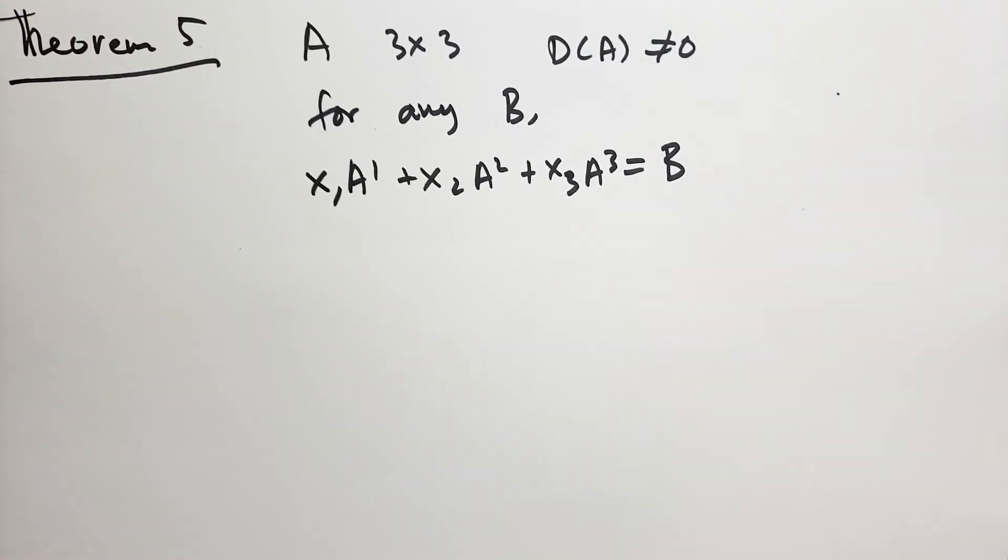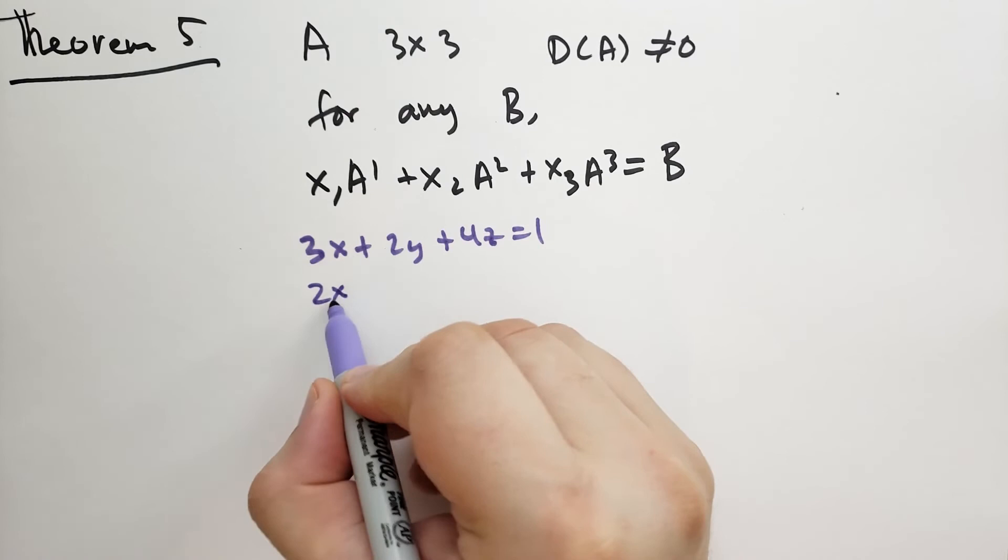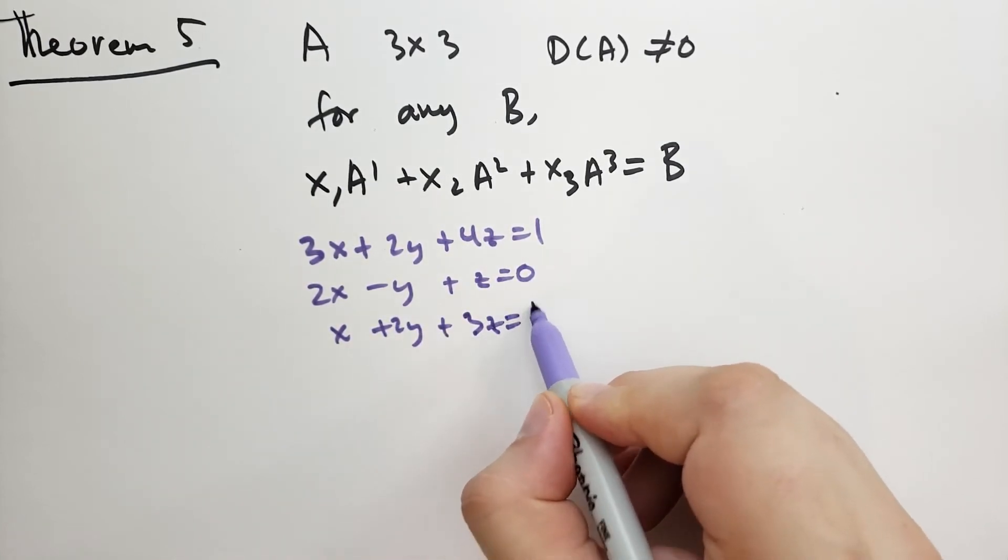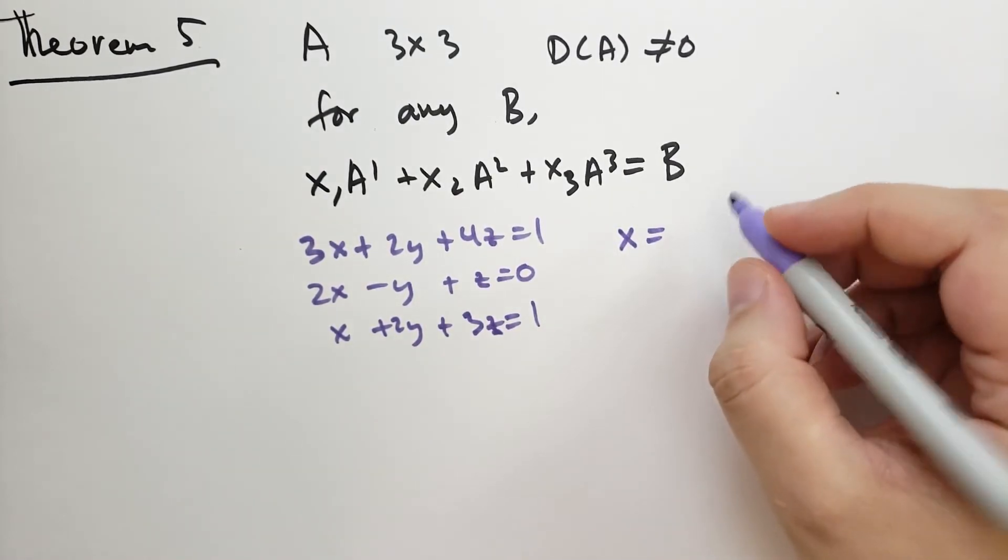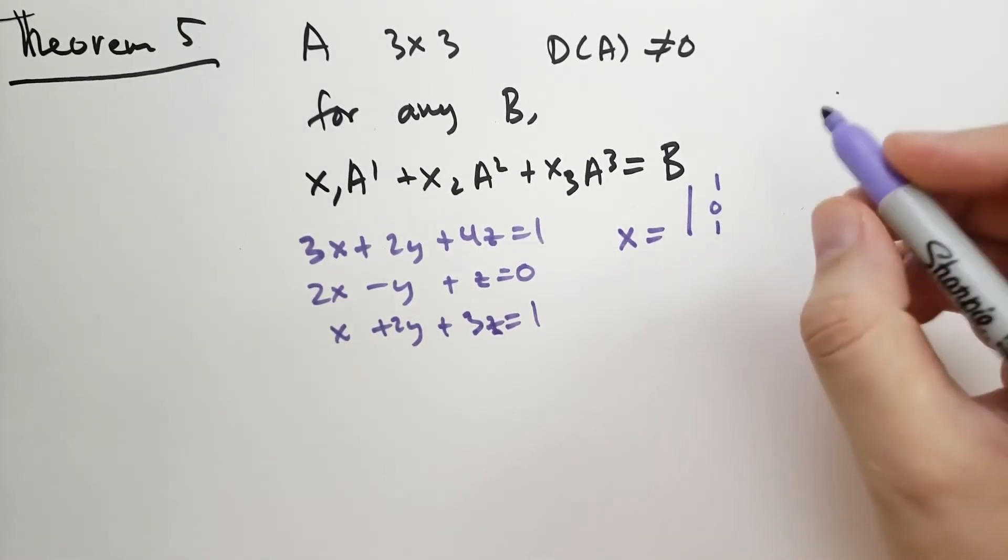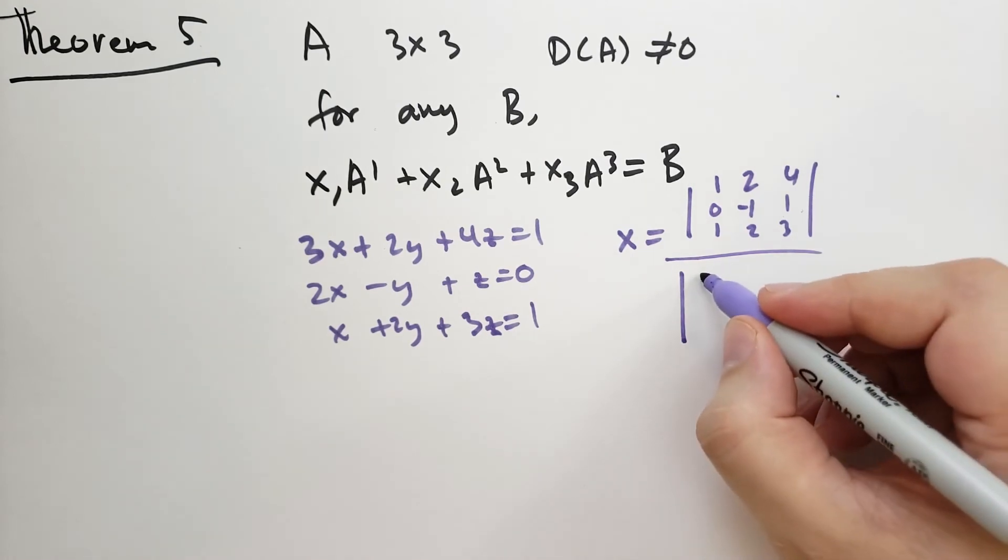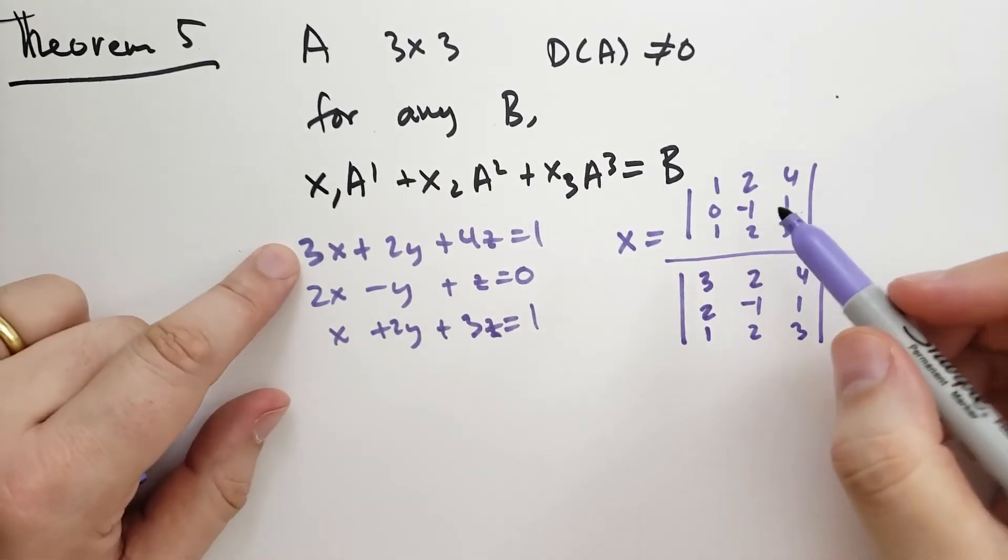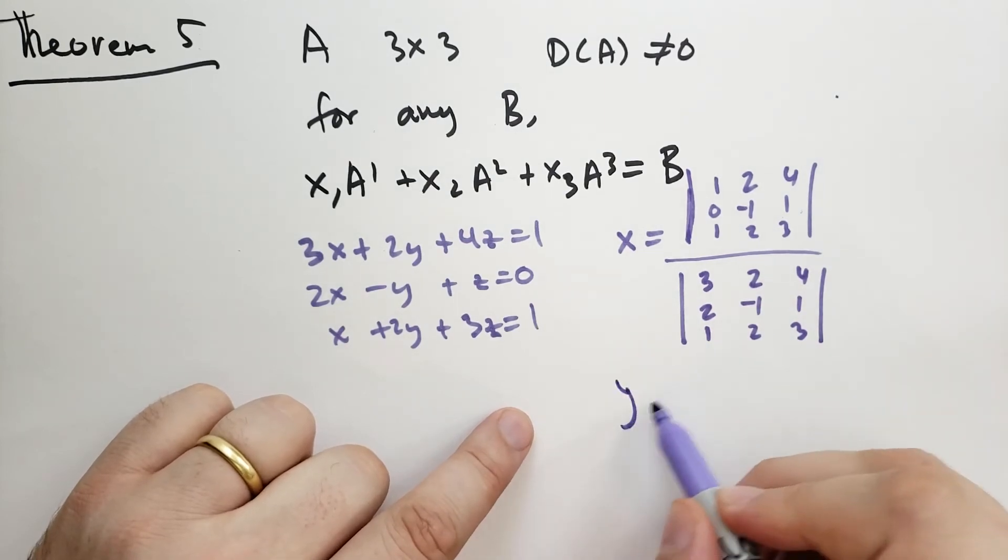Example. Let's do some examples. We have 3X plus 2Y plus 4Z equals 1, 2X minus Y plus Z equals 0, and X plus 2Y plus 3Z equals 1. You'll recognize this as the equation for three different lines. We're basically trying to find where all three of these lines intersect in three dimensions. So we prove that X equals the determinant (1, 0, 1, 2, -1, 2, 4, 1, 3) over the determinant of (3, 2, 1, 2, -1, 2, 4, 1, 3). I was just basically reading off the coefficients here. Because X is the first one, we're substituting B for that first column.